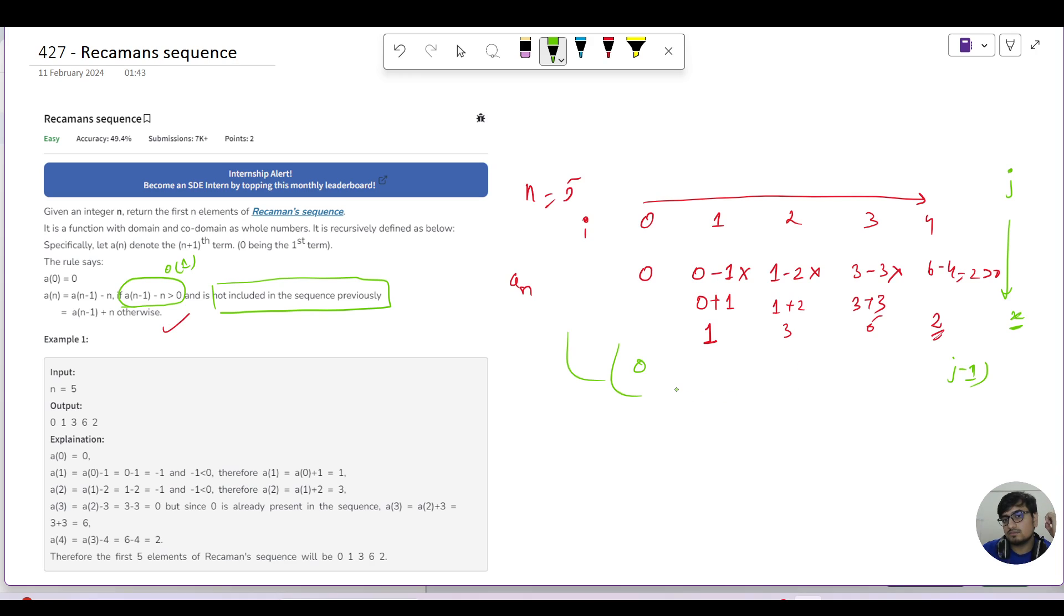Correct. So obviously the brute force approach would be: I will search from 0 to j-1 using a linear search. At any point if I get any x value, then I will break that.